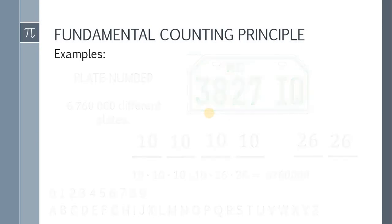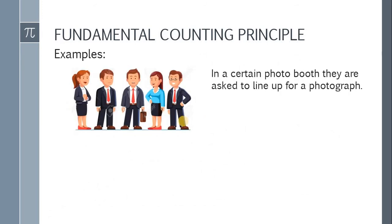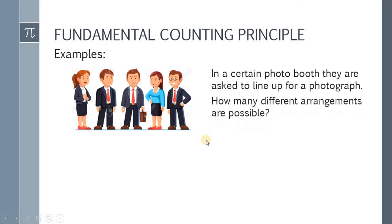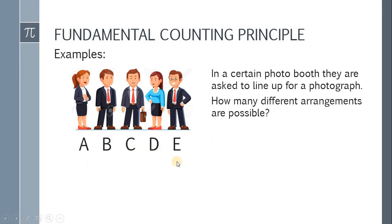Now let's have another example. In a certain photo booth, 5 people are asked to line up for a photograph — let's call them person A, B, C, D, and E. Each different ordering is a different arrangement. The question is: how many different arrangements are possible? We create five positions. For the first position, since there are 5 people, we have 5 options.